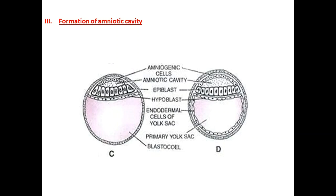Coming to diagram C: the epiblast cells and trophoblast have separated slightly, and a cavity has formed above. In the third step, the formation of the amniotic cavity takes place - a space between the embryonic disc and the trophoblast. That is shown in diagram C - the formation of the amniotic cavity.